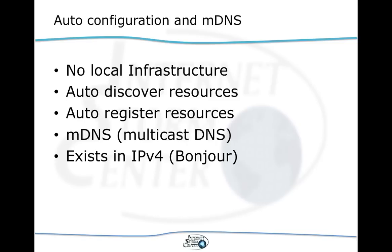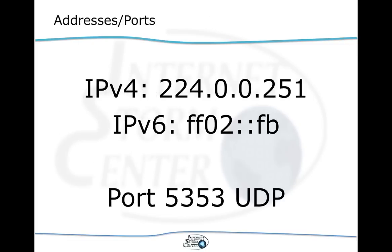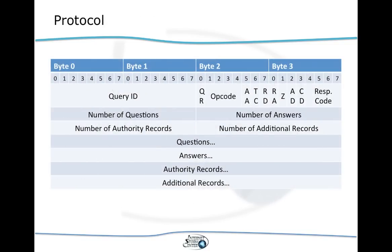There are two specific multicast groups that go with multicast DNS. In IPv4 it's 224.0.0.251, and in IPv6 it's FF02::FB — FF02 being the link-local scope for multicast, and FB being 251 in hexadecimal. Instead of port 53, multicast DNS uses port 5353.